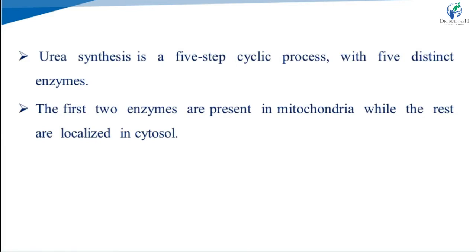Urea synthesis is a five-step cyclic process involving five distinct enzymes. The first two enzymes are present in the mitochondria, while the remaining three are localized in the cytosol. So the urea cycle partially takes place in the mitochondria and partially in the cytosol.